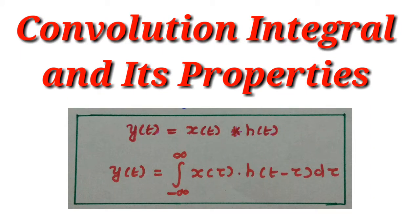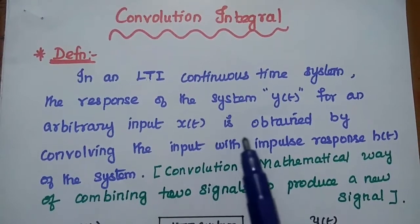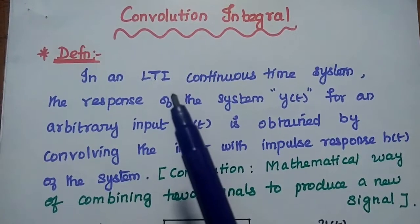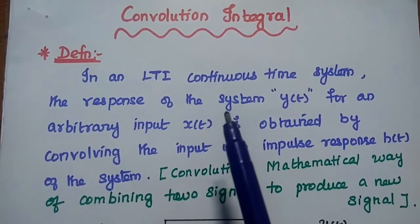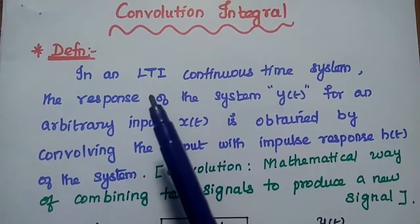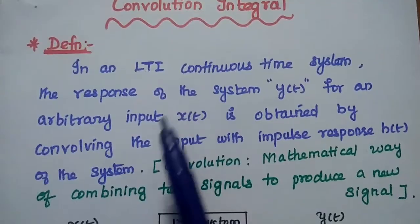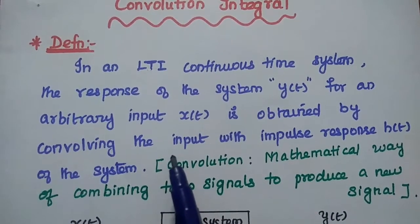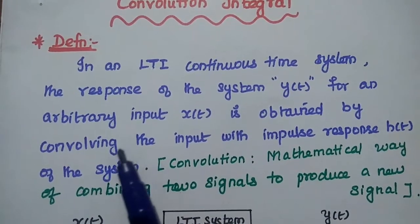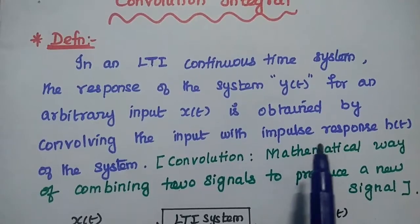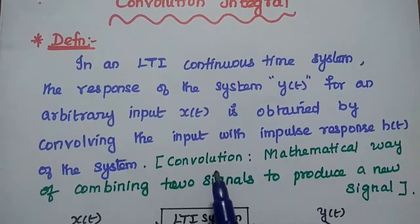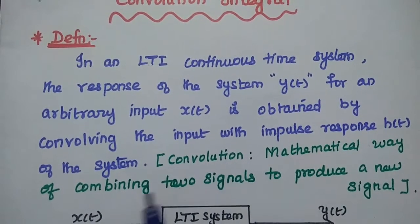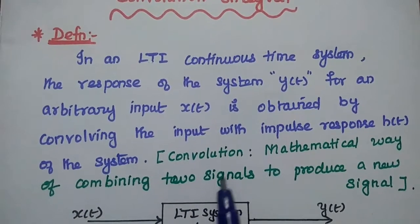Dear students, now we are going to discuss convolution integral and its properties in detail. Let's start with the definition of convolution integral. Here we are going to consider an LTI continuous time system. In most real time applications, we are using continuous time systems. LTI represents linear time invariant system. The response of the system for any arbitrary input is obtained by convolving the input signal with the impulse response of the system. In general, convolution is nothing but the mathematical way of combining two signals to produce a new signal.